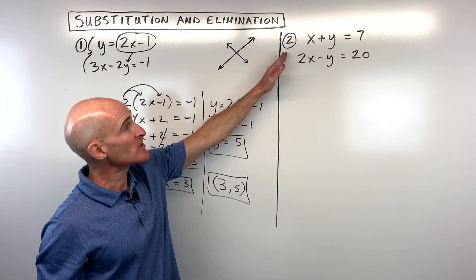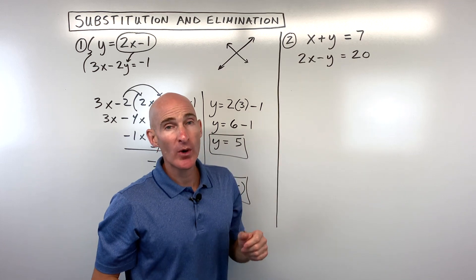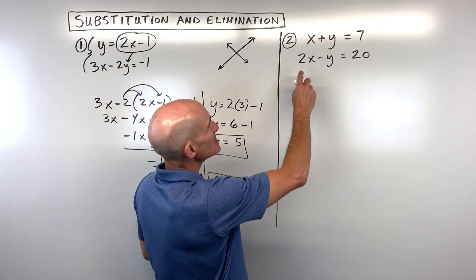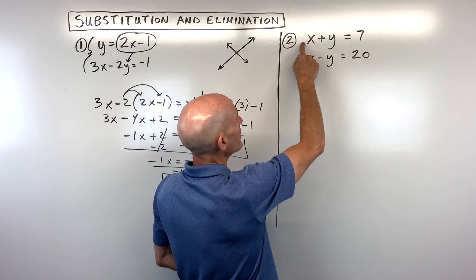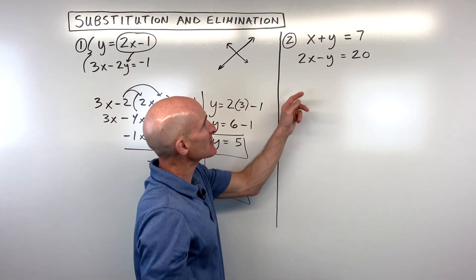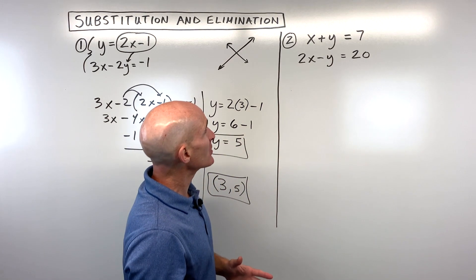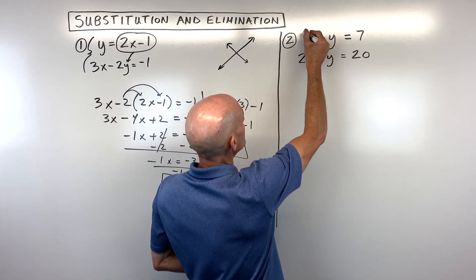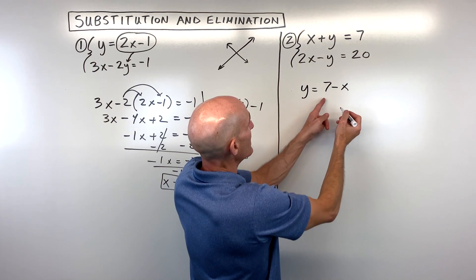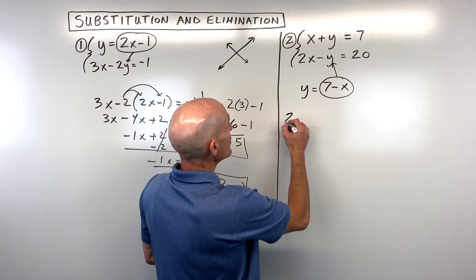Now let's look at example 2. This one's a little different because we don't already know what y or x equals, so we have to rearrange one of the equations to solve for y or x. It's often easiest to solve for a variable with a coefficient of 1. I wouldn't try to isolate the x with coefficient 2 because that leads to fractions and makes the work more challenging. Let's take the top equation and subtract x from both sides, giving us y equals 7 minus x.